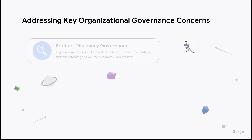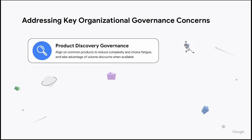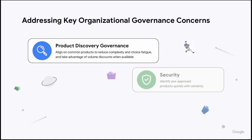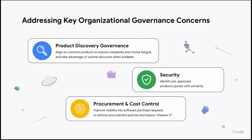These features help teams align on common products to reduce complexity, simplify knowledge sharing, and take advantage of volume discounts, identify pre-approved products quickly with certainty, and improve visibility into software purchase requests to enforce procurement policies and reduce shadow IT.